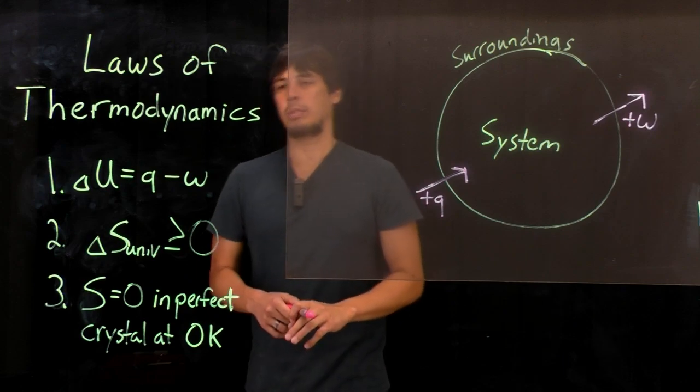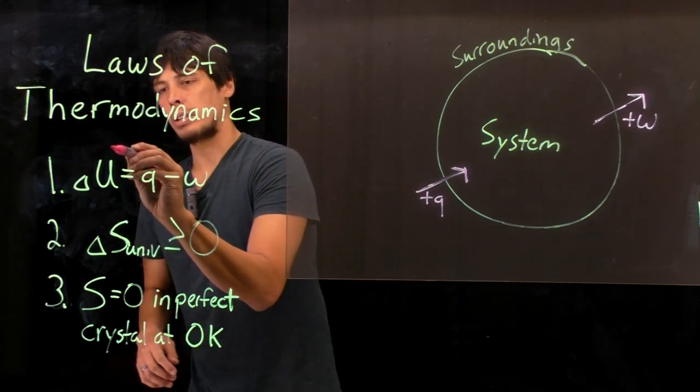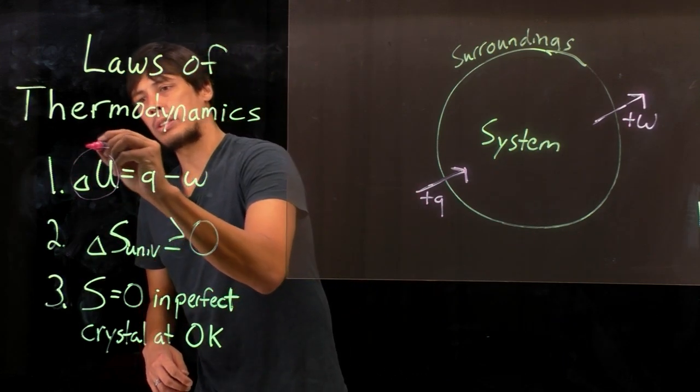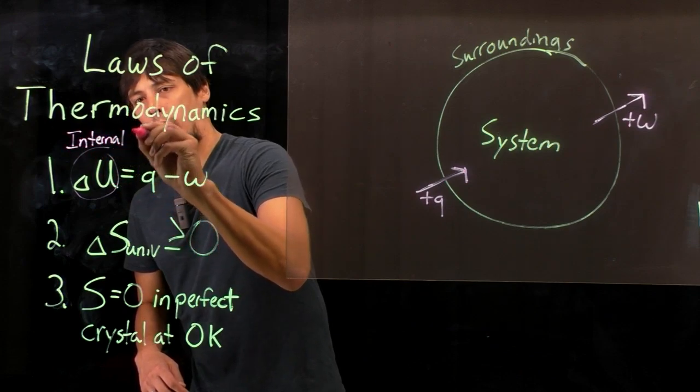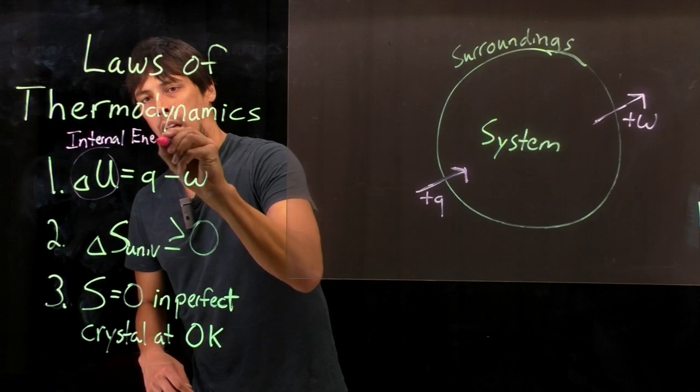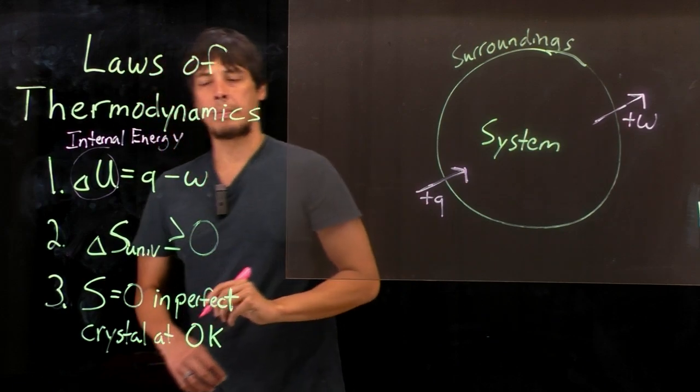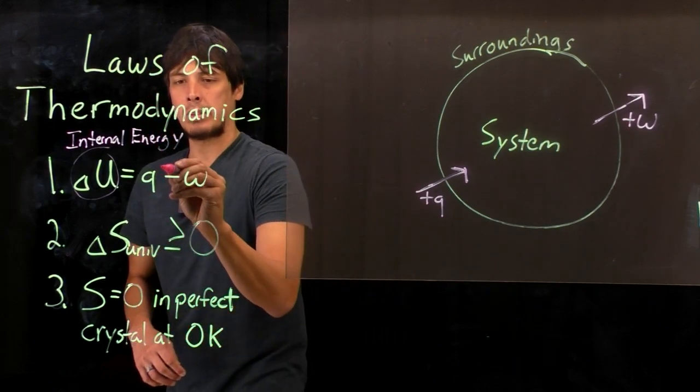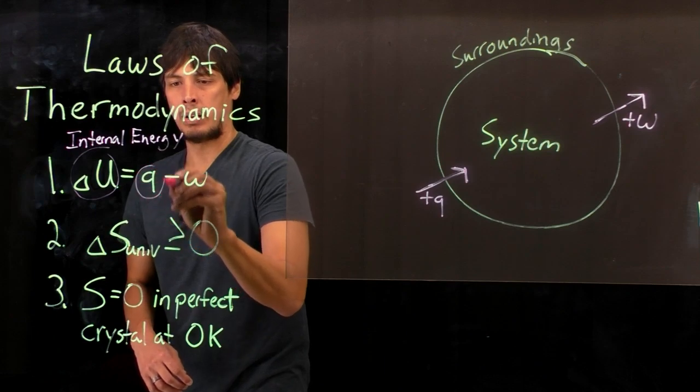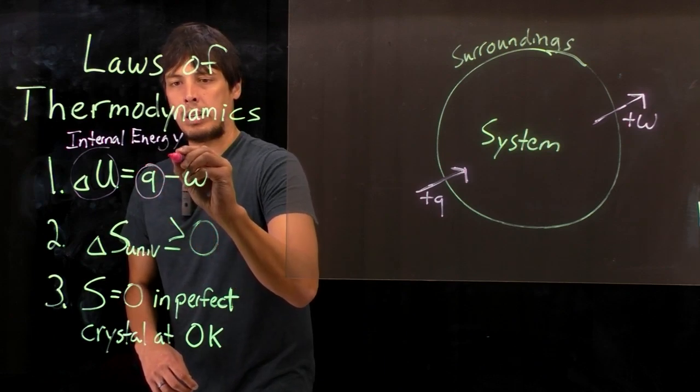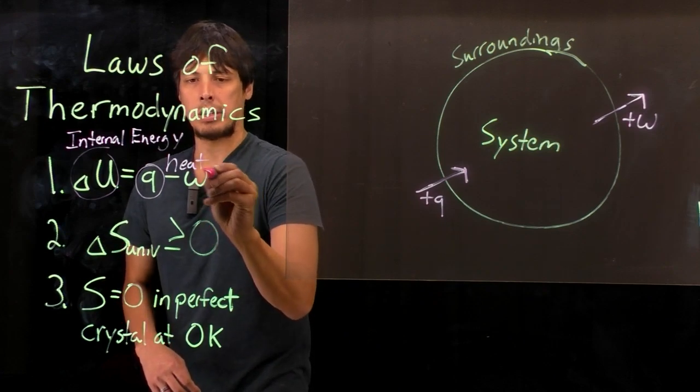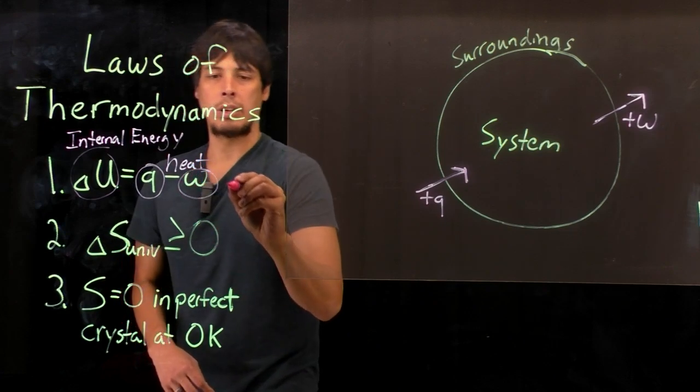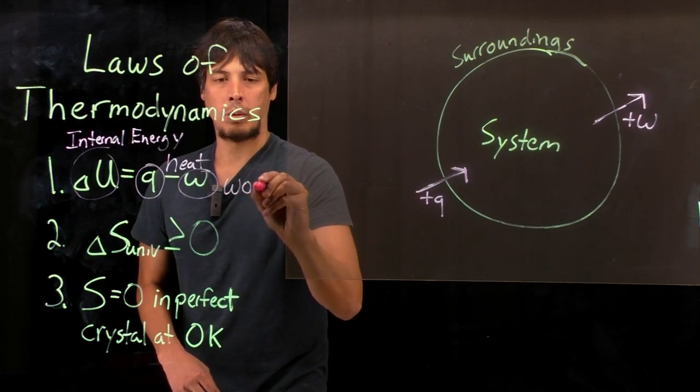So that allows for this where delta U is the change in the internal energy of the system. And as I mentioned, Q is going to be heat, either transferred to or from the system or the surroundings, and W which is work.